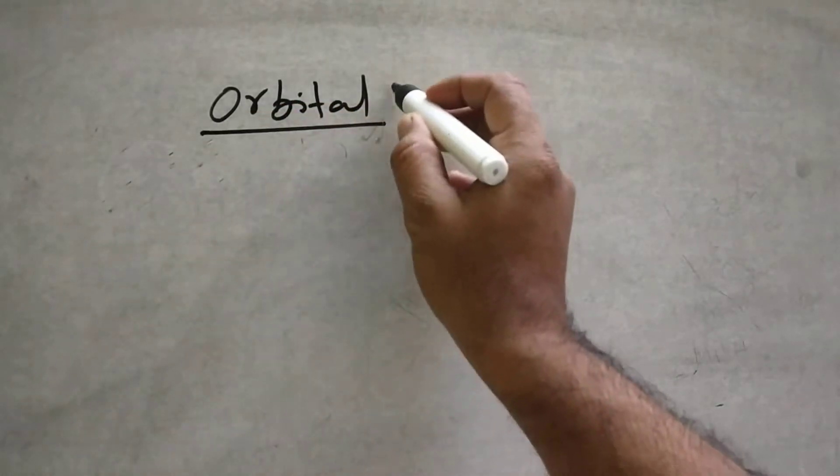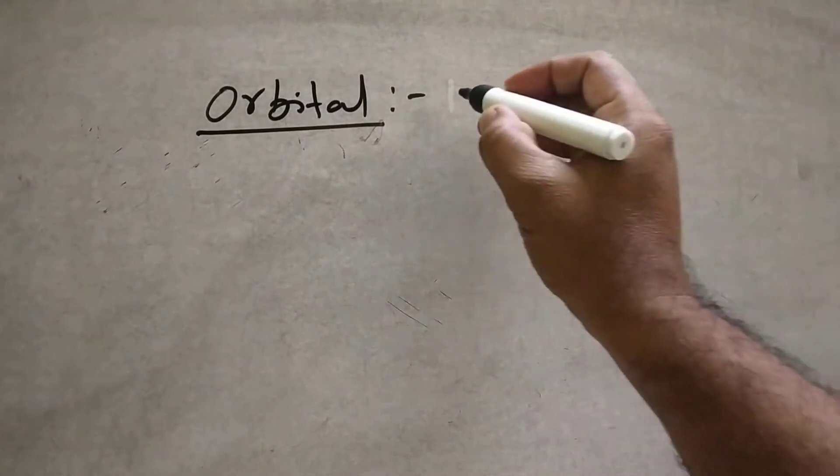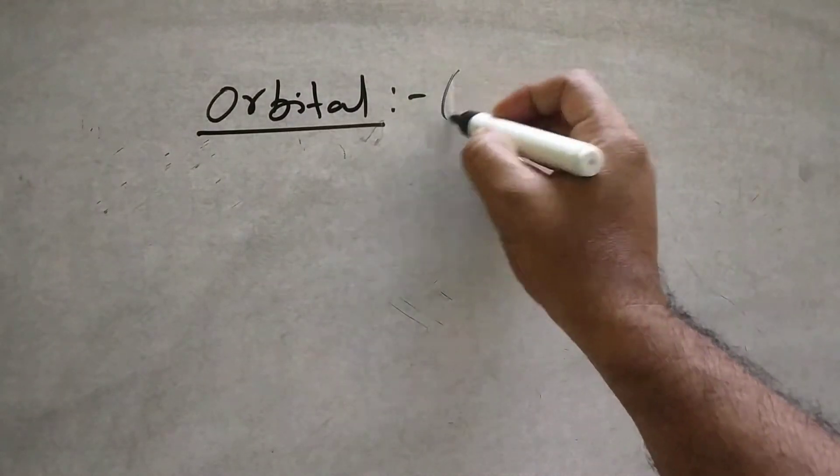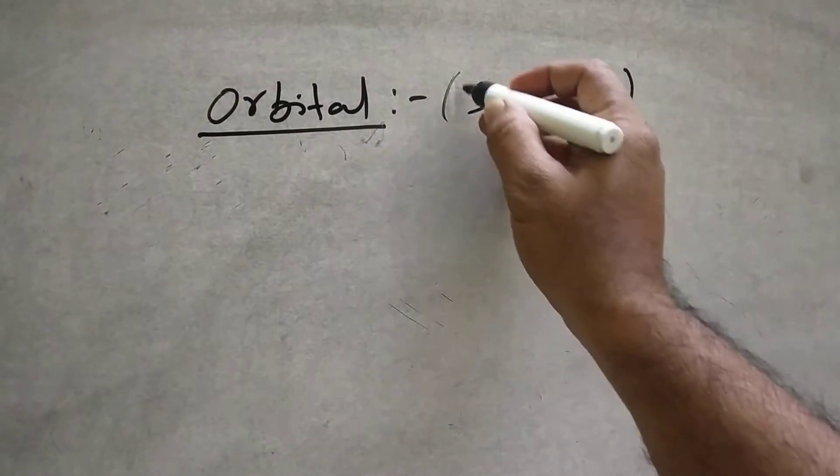Last class, I explained about orbitals. What is an orbital? Where the probability of finding an electron is maximum is called an orbital. Orbitals are classified into S-orbital, P-orbital, D-orbital, and F-orbital.